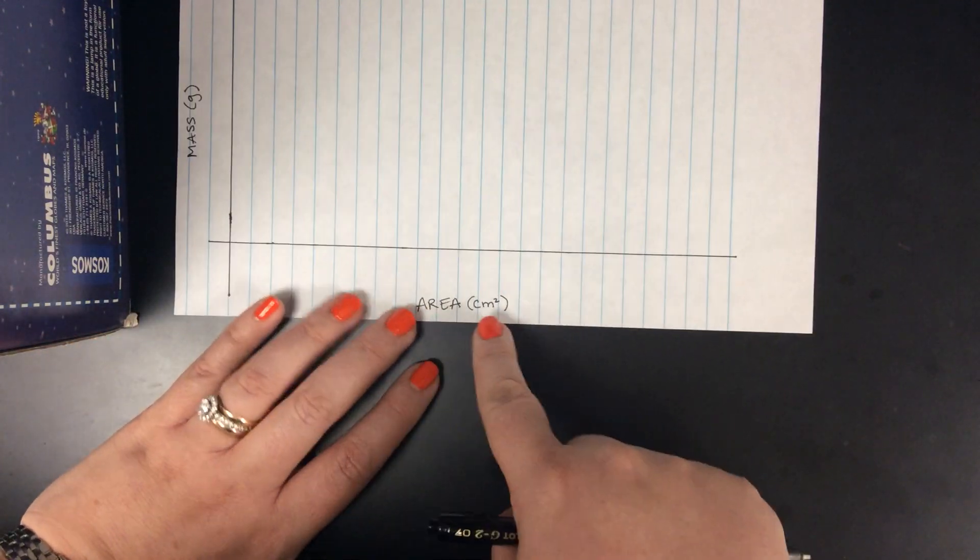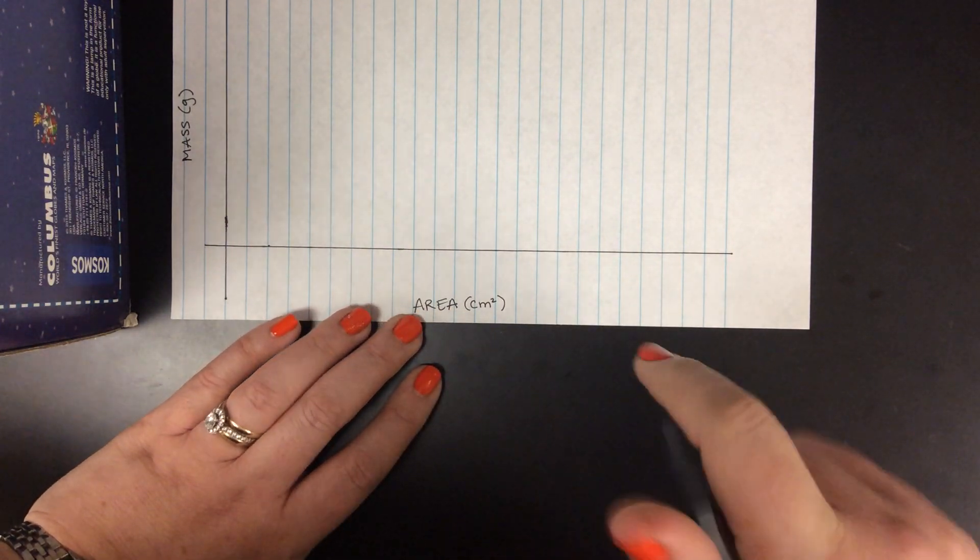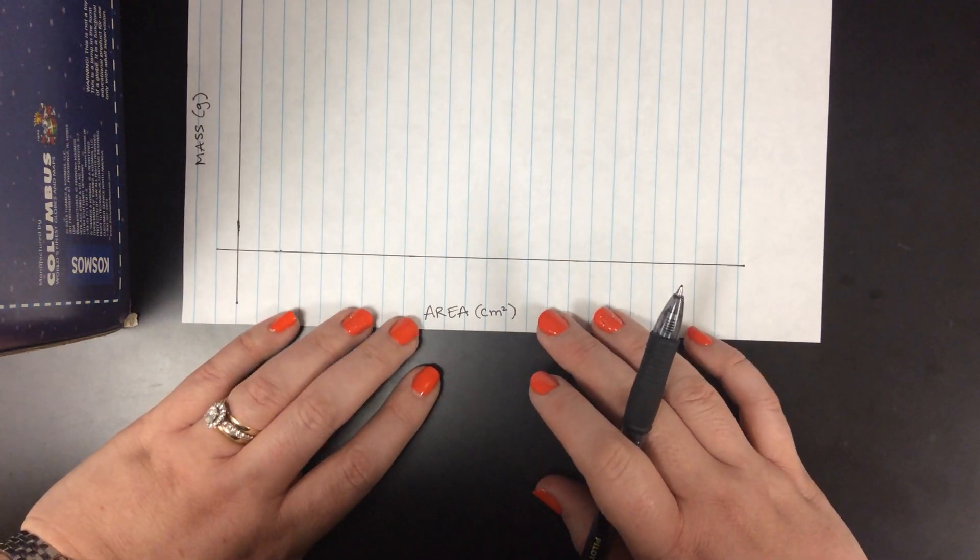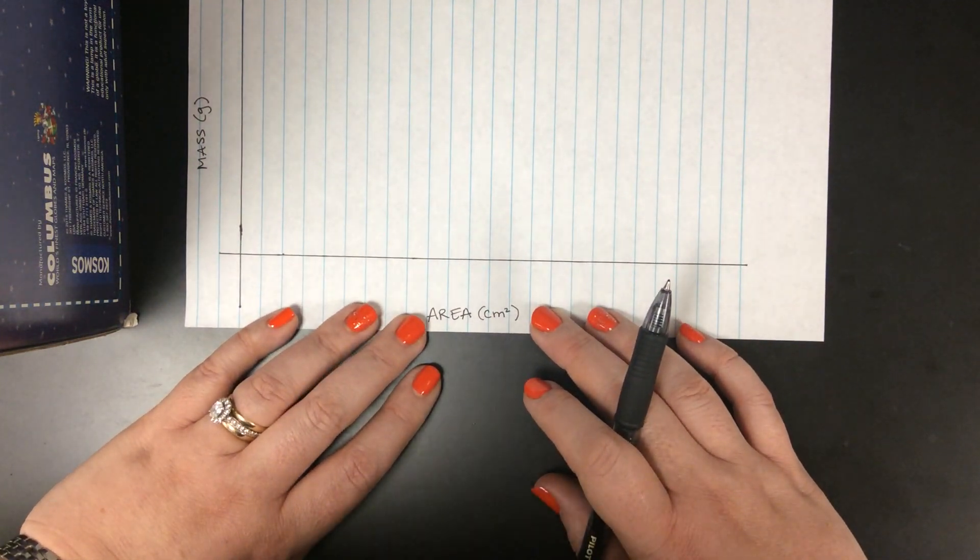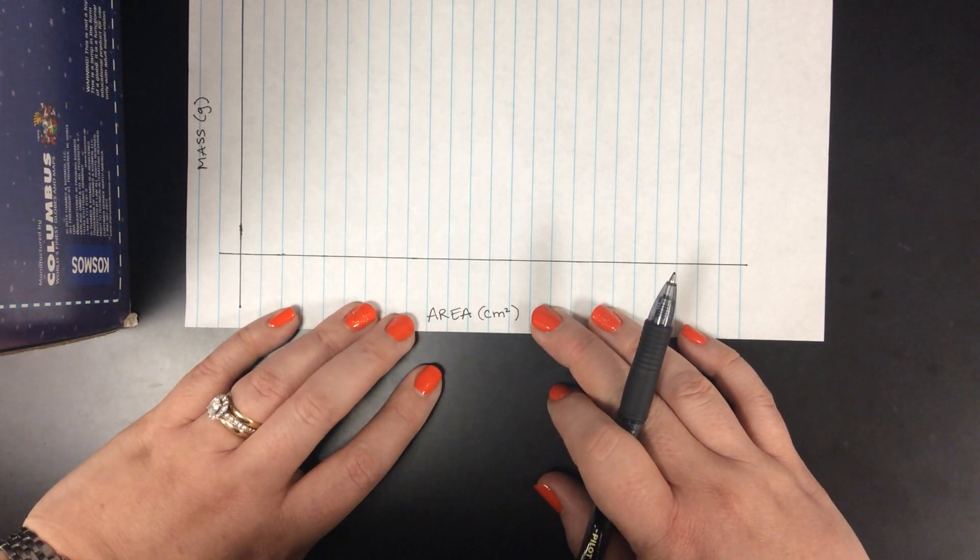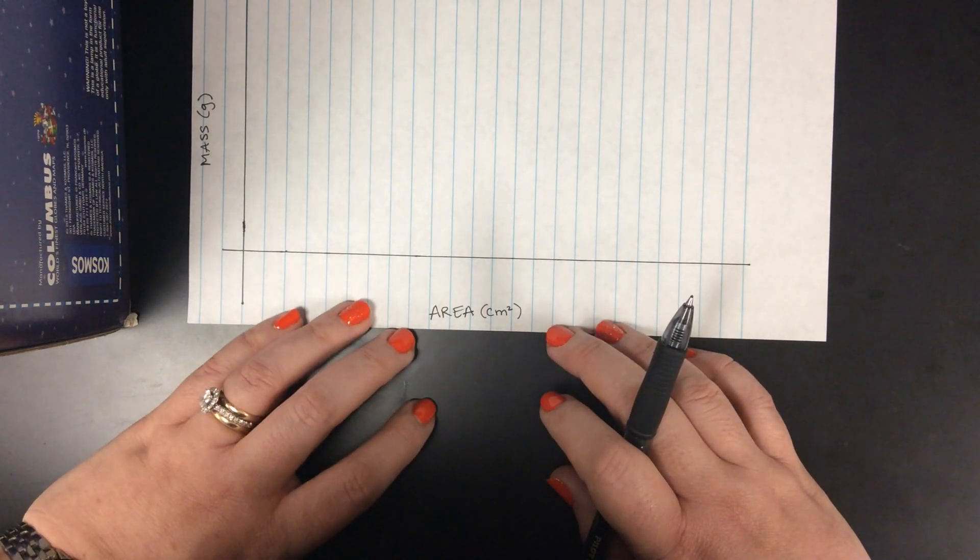So in this case, I want you to look at your data chart on page three. I want you to look at your areas for pieces A through H. Ignore the full tile for right now. Find your largest area for any of those small tile pieces. Circle it, put a star by it, mark it in some way so you remember that that's the one that you're working with.